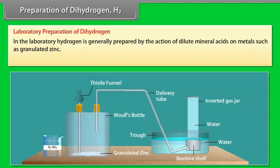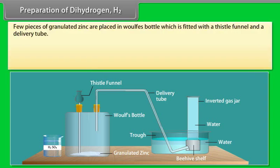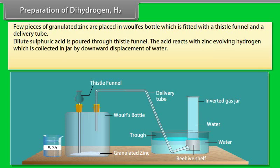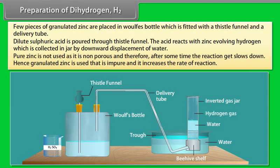In the laboratory, hydrogen is generally prepared by the action of dilute mineral acids on metals such as granulated zinc. Few pieces of granulated zinc are placed in a bottle which is fitted with a thistle funnel and a delivery tube. Dilute sulphuric acid is poured through thistle funnel. The acid reacts with zinc, evolving hydrogen, which is collected in jar by downward displacement of water. Pure zinc is not used as it is non-porous and therefore, after some time, the reaction slows down. Hence, granulated zinc is used that is impure and it increases the rate of reaction.